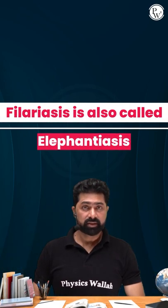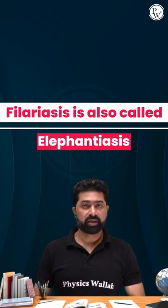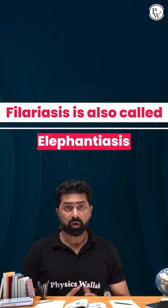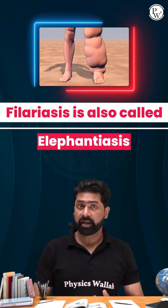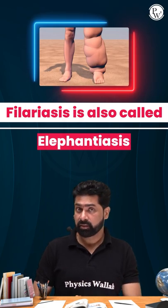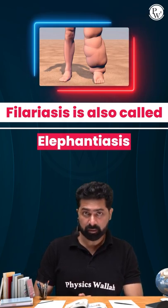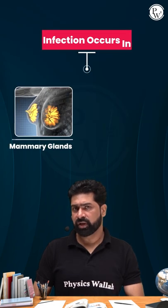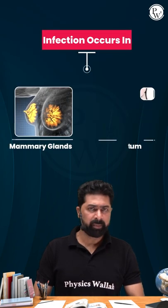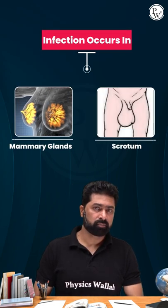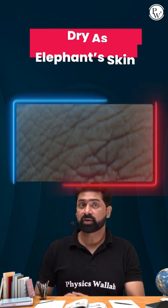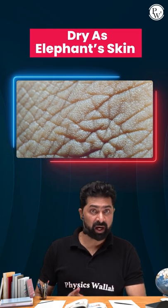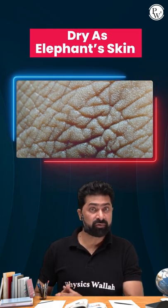The disease Filariasis is also called Elephantiasis. Is it called Elephantiasis because of the swelling of the leg and appearance like an elephant's leg? No. What about if the infection occurs in mammary glands or scrotum? It is called Elephantiasis because the skin of the affected part becomes dry, like an elephant's skin.